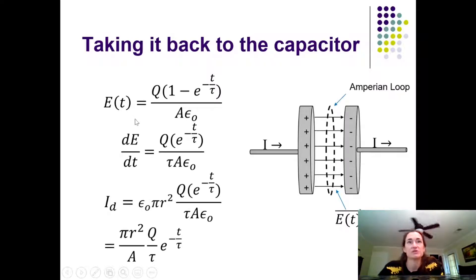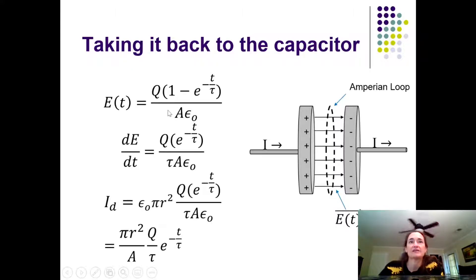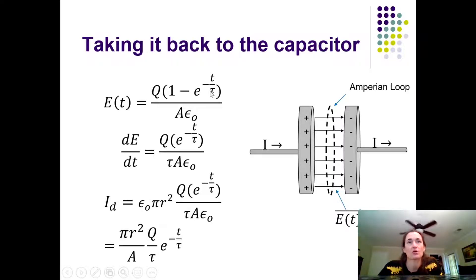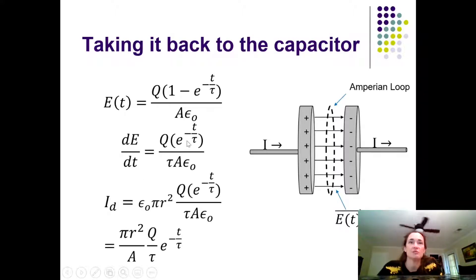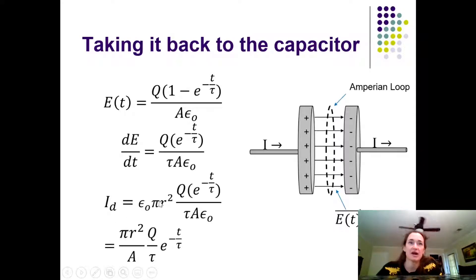The electric field equals σ/ε₀ (vacuum, no dielectric), and σ = q/A, where q is the time-dependent charge: q = Q·(1 − e^(−t/τ)), with τ = RC. Taking the time derivative dE/dt gives Q/(τ·A·ε₀)·e^(−t/τ). The displacement current then becomes ε₀·πr²·Q/(τ·A·ε₀)·e^(−t/τ).